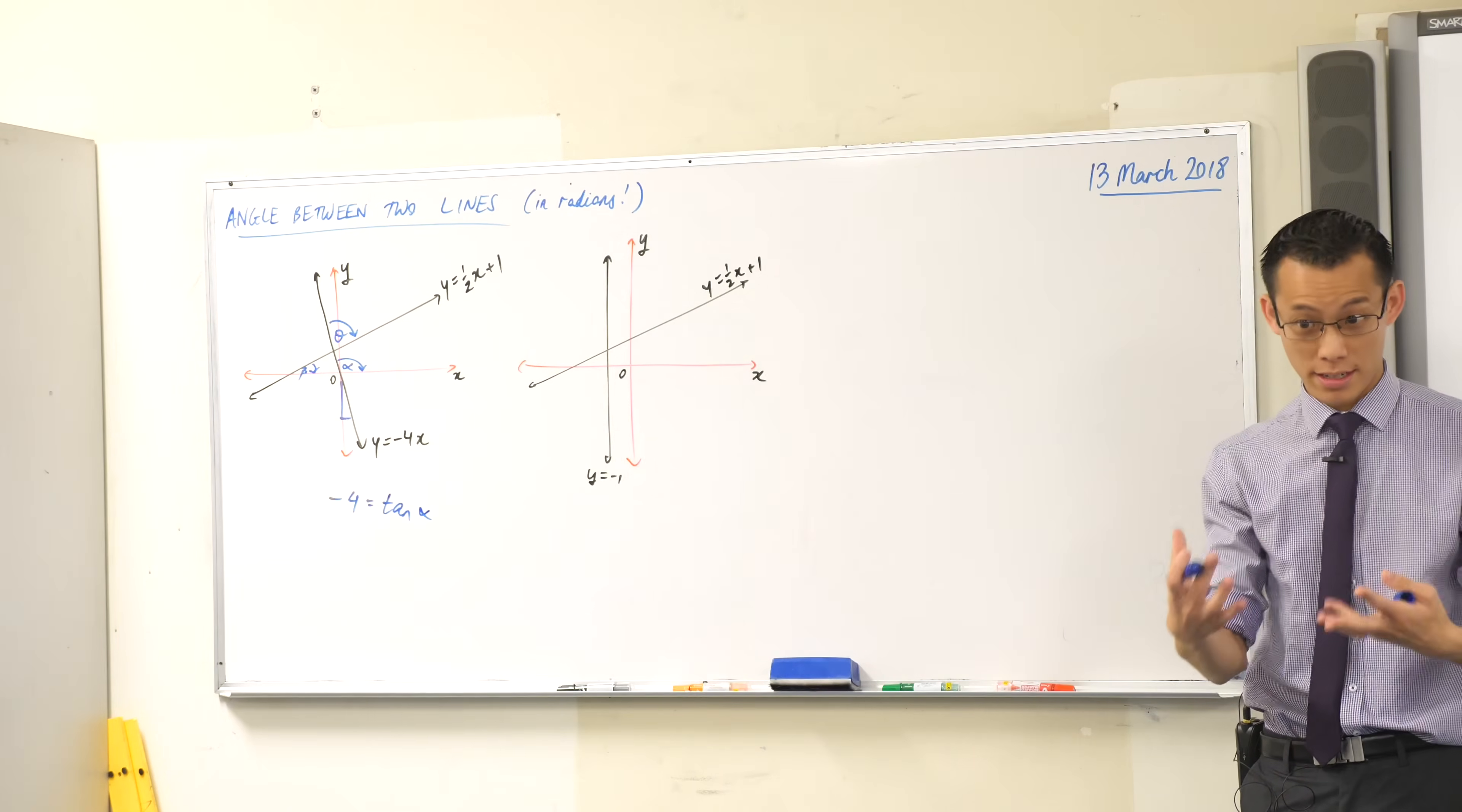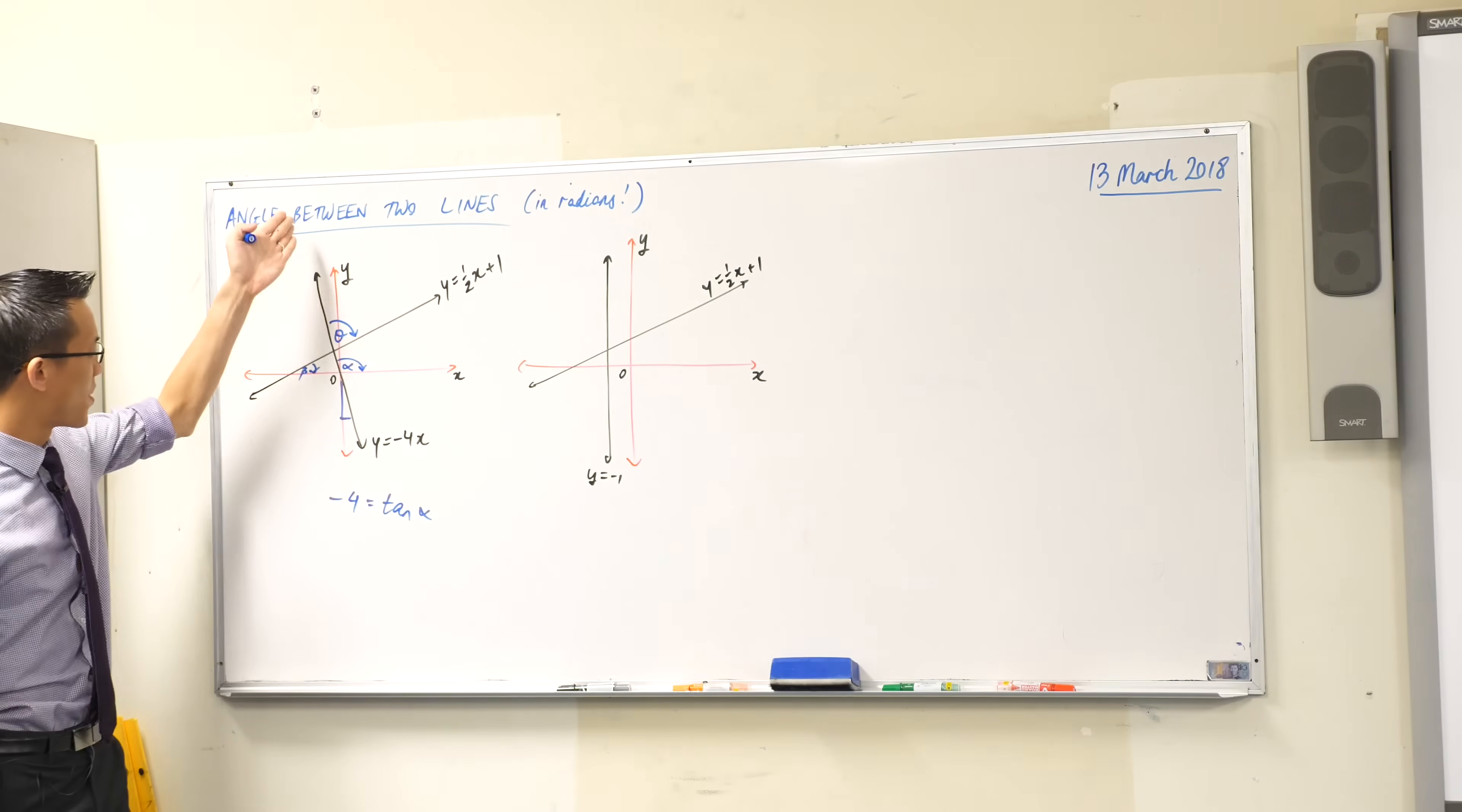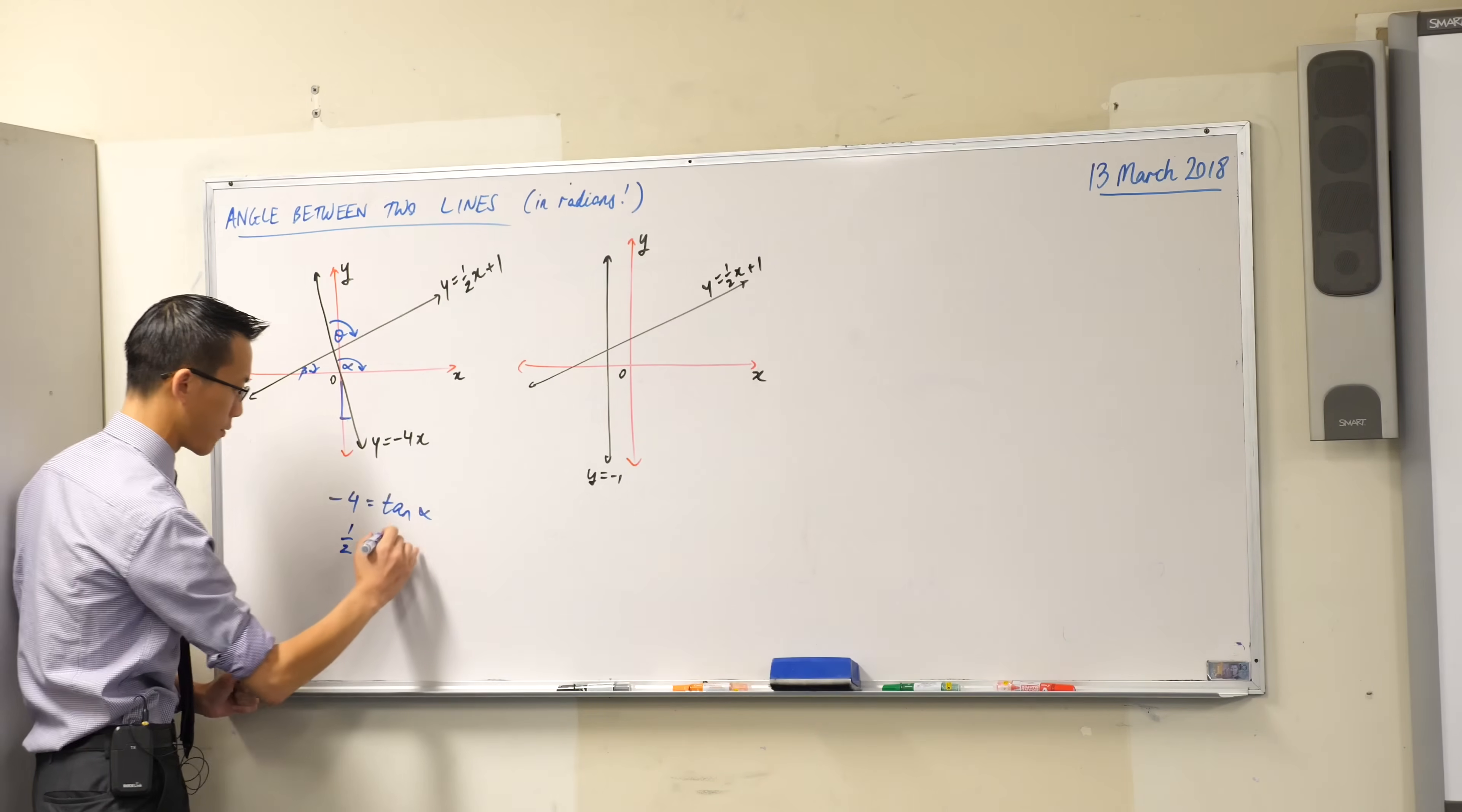I'm not using that particular formula in this case, because where we're more interested, our theta today, is this angle, the one between the two lines. Now, if that's for this steep negative line, I can do the same thing for the other line. So a half is the other gradient I'm interested in, and it's equal to tan beta.